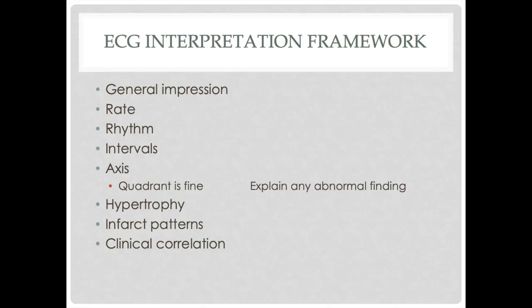Next up is axis determination. All I'm looking for is a quadrant — or a quintrant, because there are really five: left axis, normal axis, right axis, no man's land, and extreme right axis, or right shoulder axis — whatever you want to call it. Left axis is divided into pathologic and physiologic. Anything abnormal needs to be explained, like fascicular blocks or stuff like that. That's it — what's the axis? Move on.